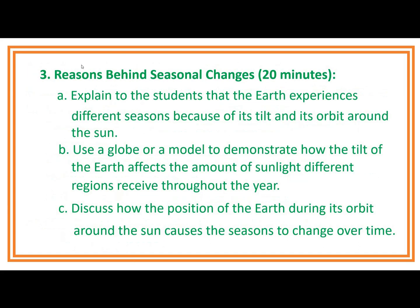Number 3: Reasons Behind Seasonal Changes — 20 minutes. Explain to the students that the Earth experiences different seasons because of its tilt and its orbit around the sun. Use a globe or a model to demonstrate how the tilt of the Earth affects the amount of sunlight different regions receive throughout the year. Discuss how the position of the Earth during its orbit around the sun causes the seasons to change over time.